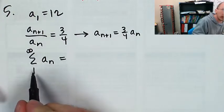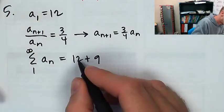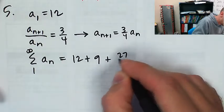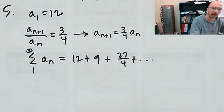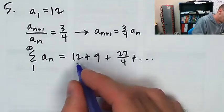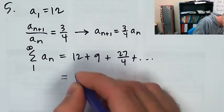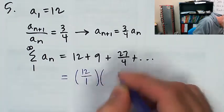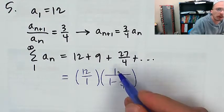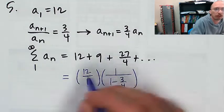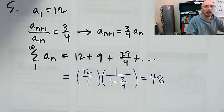Starting at n equals 1, a_1 is 12, then 9, then 27/4, and so on. Since the common ratio is 3/4 and its absolute value is less than 1, the total sum equals the first term multiplied by 1 over 1 minus the common ratio. That's 12 times 1 over 1 minus 3/4, which is 12 times 4, giving us 48.